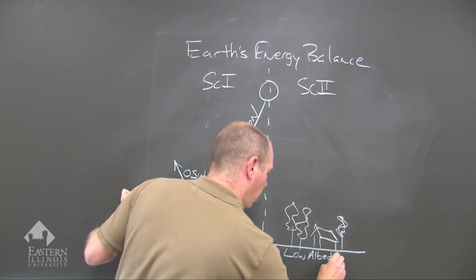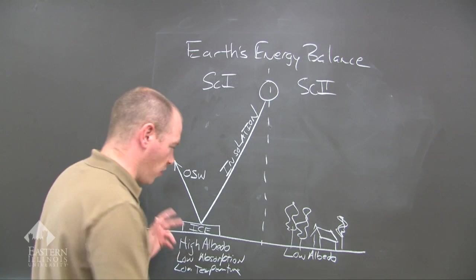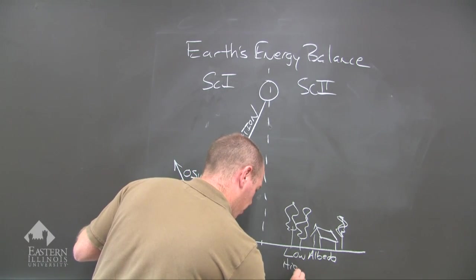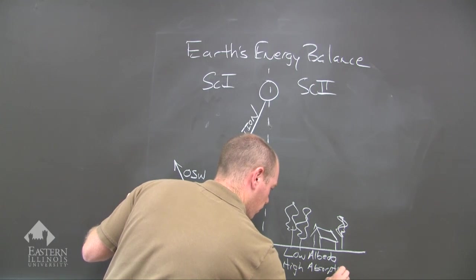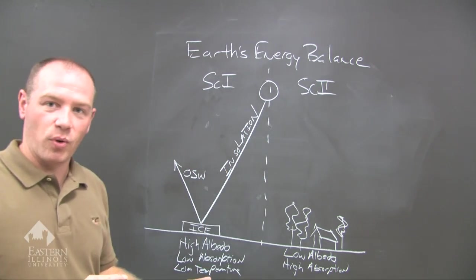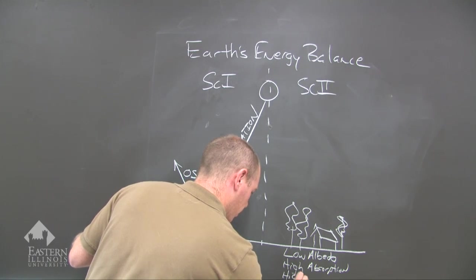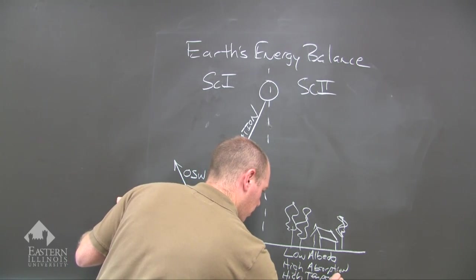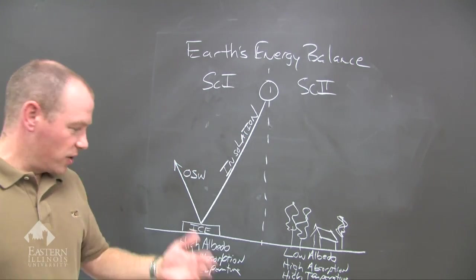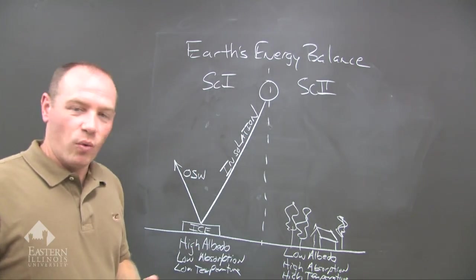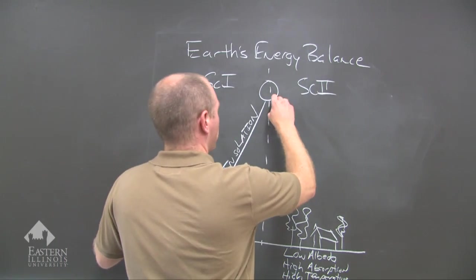And if you have low albedo, what is the absorption going to be? Well, it's going to be high absorption. And if you have high absorption, then you have to have a high temperature. So low albedo causes high absorption, which then results in a high temperature. So let's see how this works.